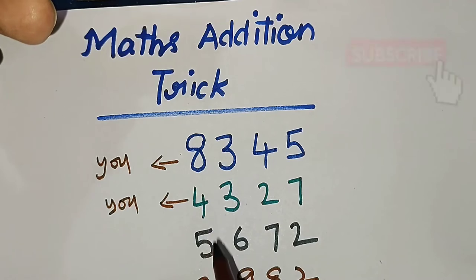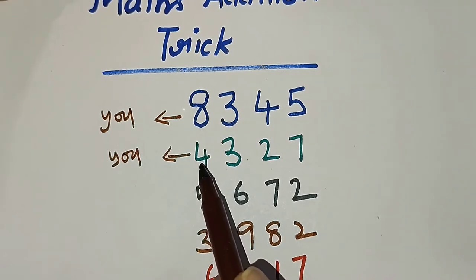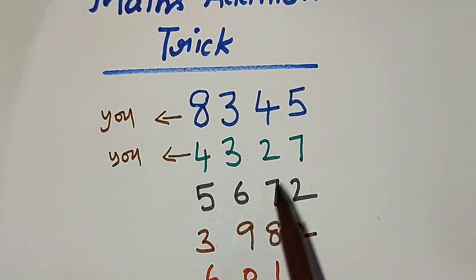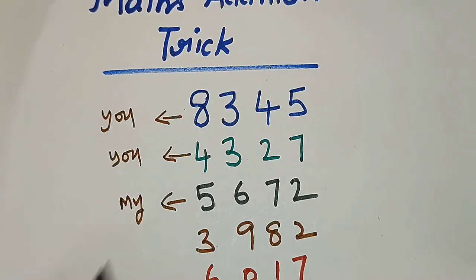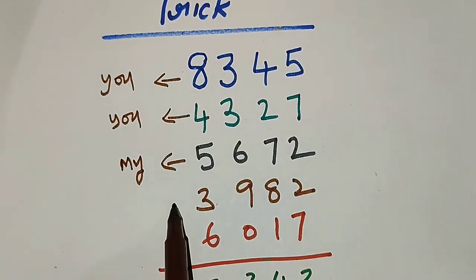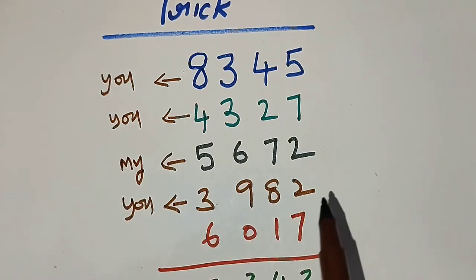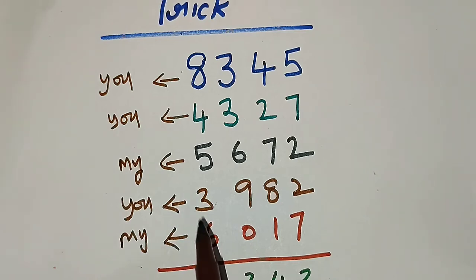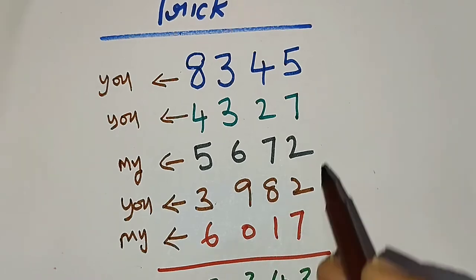Immediately I wrote a number such that the sum of each corresponding digit equals 9. What I did was subtract each digit from 9: 9−4=5, 9−3=6, 9−2=7, 9−7=2. So my number was 5672. This is my number. Then I asked you to write another number and you gave 3982.